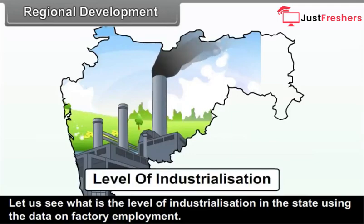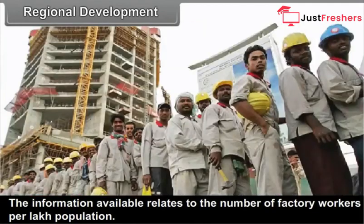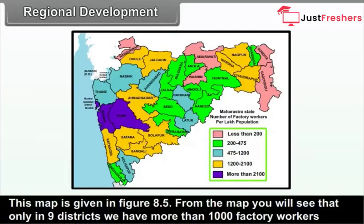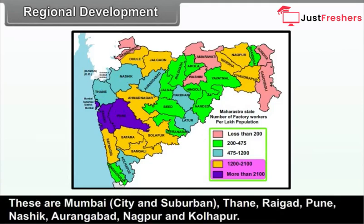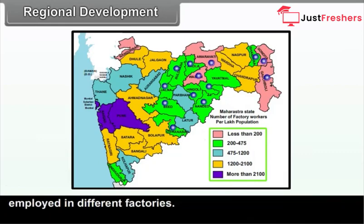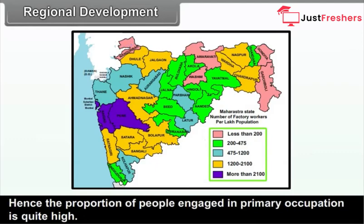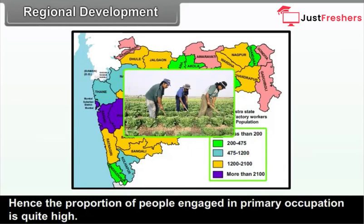The level of industrialization in the state can be seen using data on factory employment — the number of factory workers per lakh population, shown in figure 8.5. Only 9 districts have more than 1,000 factory workers per lakh population: Mumbai City and Suburban, Thane, Raigarh, Pune, Nasik, Aurangabad, Nagpur, and Kolhapur. Certain districts in central and eastern Maharashtra have even less than 500 persons per 1,00,000 employed in factories. A somewhat similar situation exists in Nandurbar and Sindhudurg districts, where the proportion of people engaged in primary occupation is quite high.